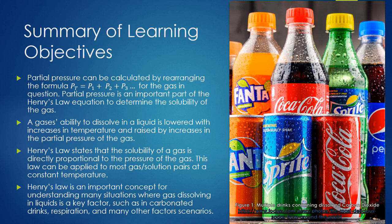To summarize what we have learned in this lecture: the partial pressure can be calculated by rearranging the partial pressure formula for the gas in question. Partial pressure is an important part of the Henry's Law equation to determine the solubility of the gas. A gas's ability to dissolve in a liquid is lowered with increases in temperature and raised by increases in the partial pressure of a gas. The Henry's Law equation states that the solubility of a gas is directly proportional to the pressure of the gas, and this law can be applied to most gas-solution pairs at a constant temperature. The Henry's Law equation is an important concept for understanding many situations where gas dissolving in liquids is a key factor, such as in carbonated drinks, respiration, and many other scenarios.